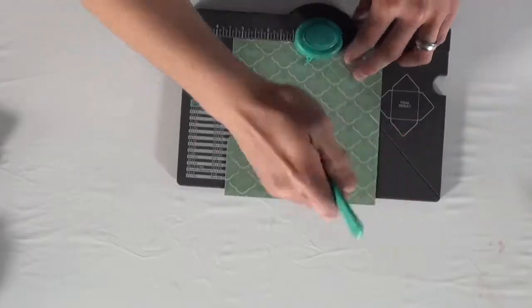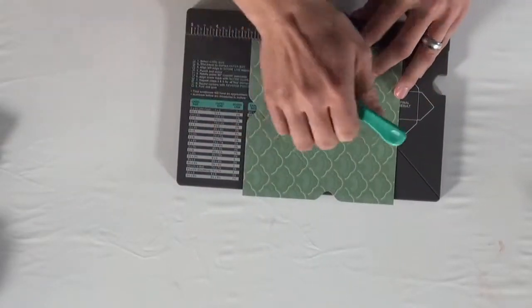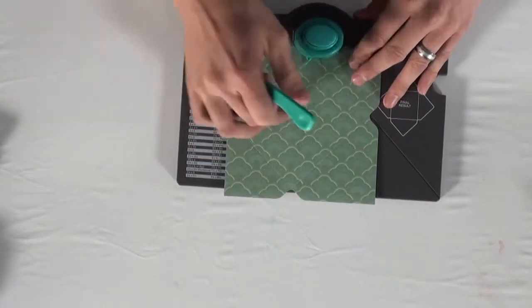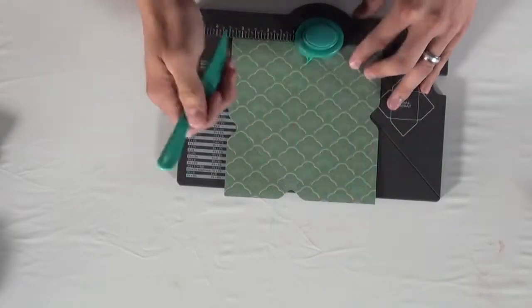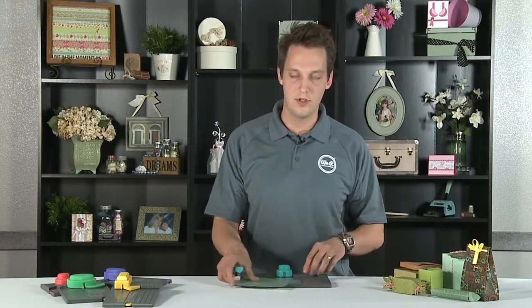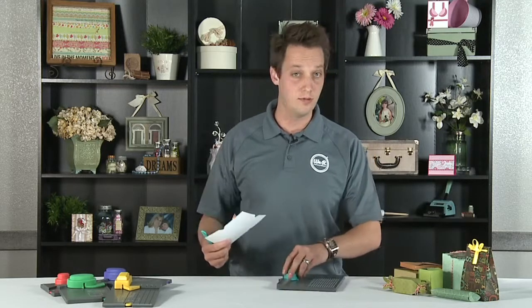So punch and score, punch and score and again lining it up, punching and scoring. This system allows us to make square and rectangular envelopes without having to over complicate things with a lot of measurements.